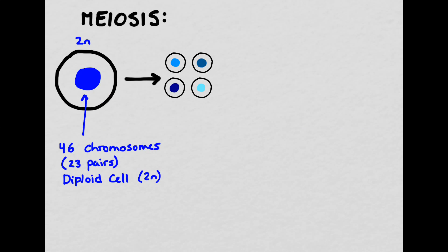Meiosis also starts with a diploid cell, 23 pairs of chromosomes. However, after meiosis occurs, we now have four daughter cells, each of which are called haploid, meaning they have 23 single chromosomes. We use the symbol N or 1N to indicate that they are haploid. Remember also that these cells are all going to be genetically diverse from one another.